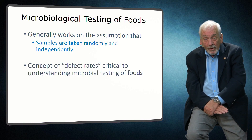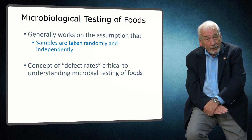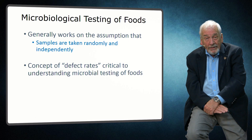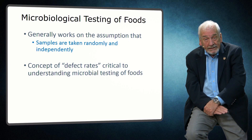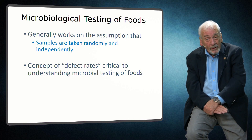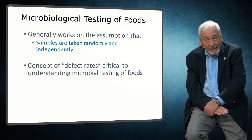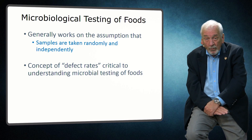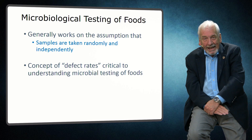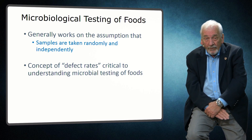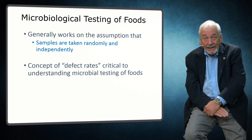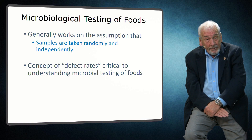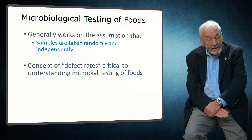Another important concept in determining the sensitivity of a microbiological testing program is understanding defect rates. Put simply, the defect rate is the percentage of food servings that contain one or more cells of the microorganism of concern. The more servings in a food batch that are contaminated, the more likely it is that we will select a contaminated serving for sampling. Conversely, if the defect rate is low — for example less than 2% — selecting a contaminated serving may be the limiting factor in detecting a contaminated batch.